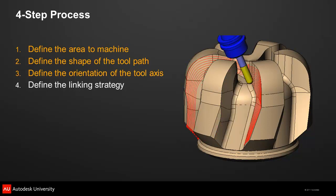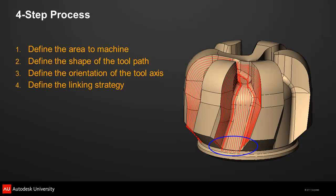After the shape of the path is defined, the user can decide how the tool will be oriented as it travels along that path. A 5-axis machine gives you a lot of flexibility in how you rotate the part or tool. Finally, the last step is to decide how the tool transitions between each cutting pass — in this example, the links at the end of the cutting passes are fairly straightforward curves.